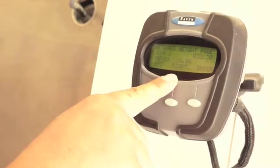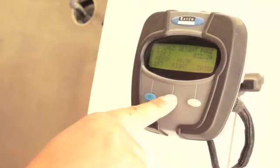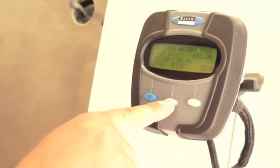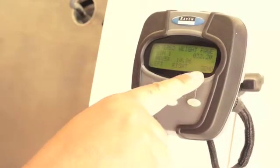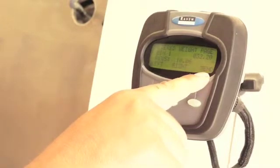To program the cal weight value, press the right key to move the cursor past the last decimal place in the cal weight value and press the send key.